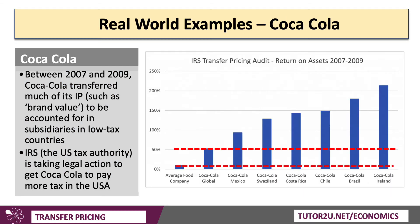Some examples: Coca-Cola — this case goes back nearly 20 years and is still essentially in the courts. Between 2007 and 2009, Coca-Cola transferred much of its IP, its intellectual property, such as brand value, to be accounted for in subsidiaries in lower tax countries, including Costa Rica, Swaziland, Mexico, Chile, Brazil, and Ireland. The IRS, the American Tax Authority, is still taking legal action to get Coca-Cola to pay more tax in the United States.